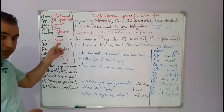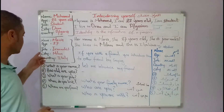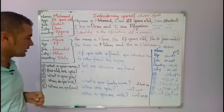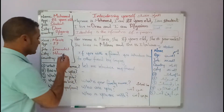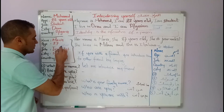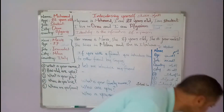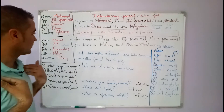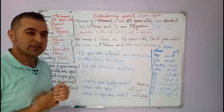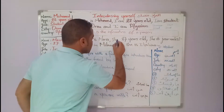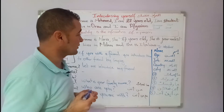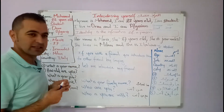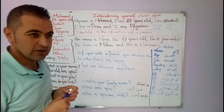Let's introduce the second person, named Maria, age 27, job journalist, city Milan, country Italy. So if I want to introduce her to another person, I would say: her name is Maria, she is 27 years old, she is a journalist, she lives in Milan, she is Italian or she is from Italy.